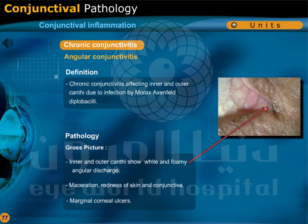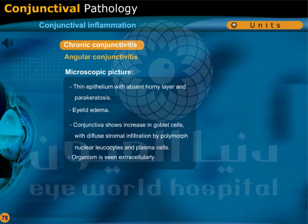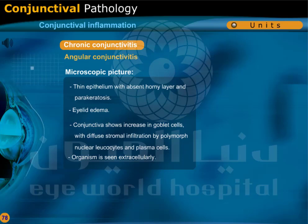Angular conjunctivitis is a chronic conjunctivitis affecting the inner and outer canthi due to infection by Morax-Axenfeld diplobacilli. The inner and outer canthi show white and foamy angular discharge, maceration, redness of skin and conjunctiva, and marginal corneal ulcers. Microscopically there is thin epithelium with absent horny layer and parakeratosis, eyelid edema. The conjunctiva shows increase in goblet cells with diffuse stromal infiltration by polymorphonuclear leukocytes and plasma cells. The organism is seen extracellularly.